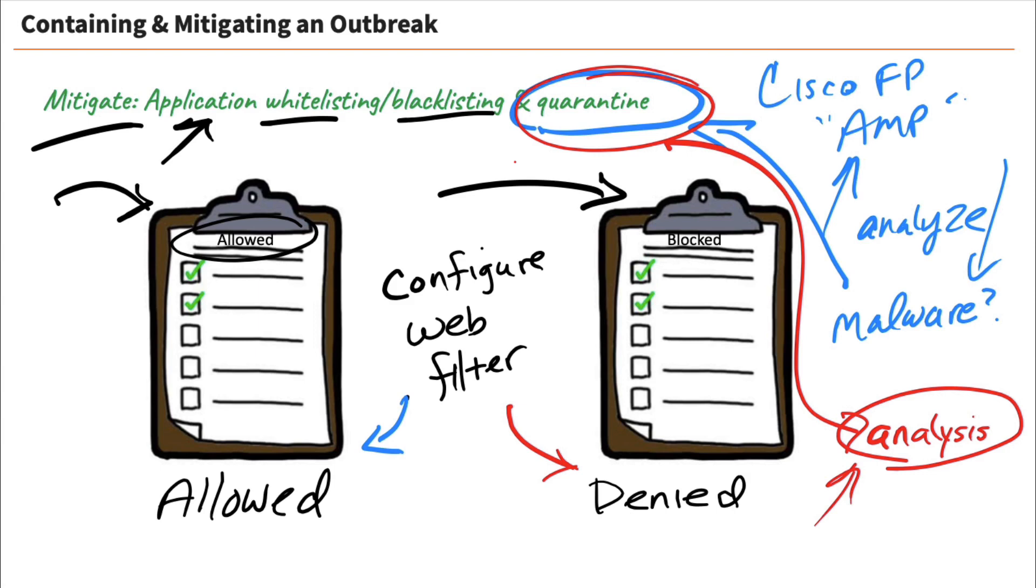And the thing is, maybe it was a false positive and it's not really malware. Well, then I would need to get that file because somebody in my environment needed it. And that is how we can use application whitelisting and blacklisting, and how quarantine can be an effective tool.